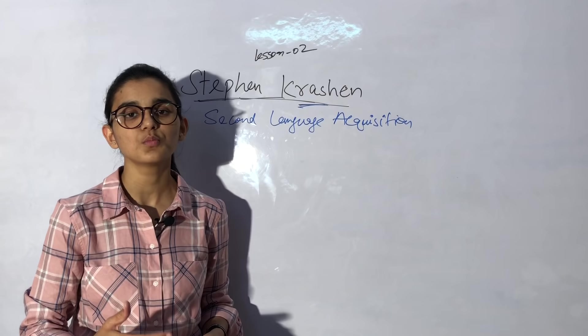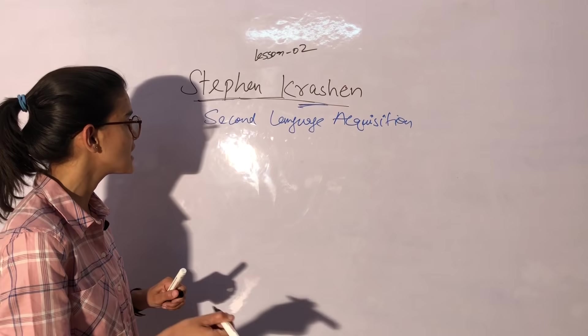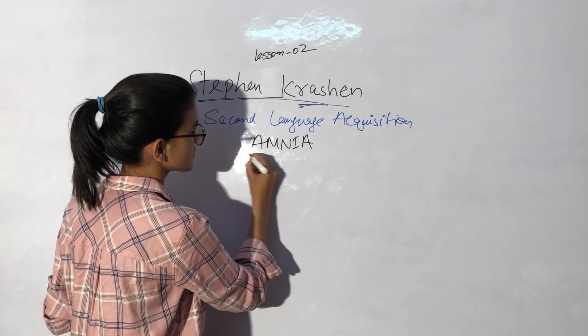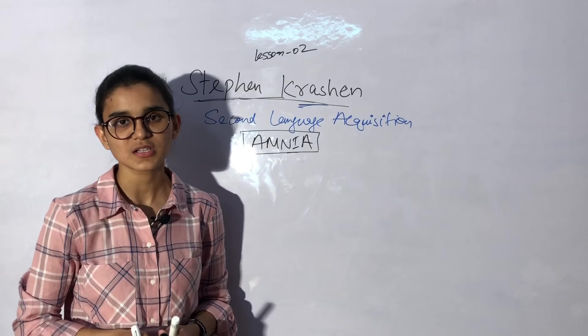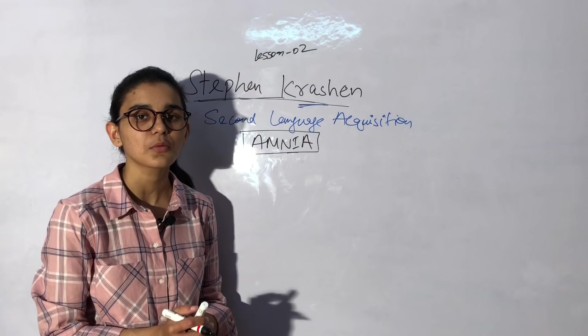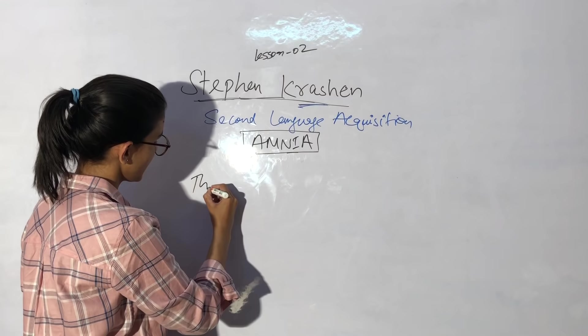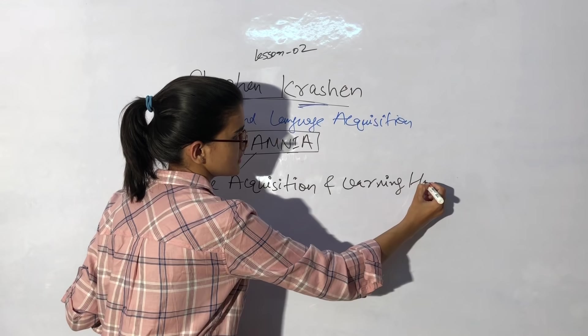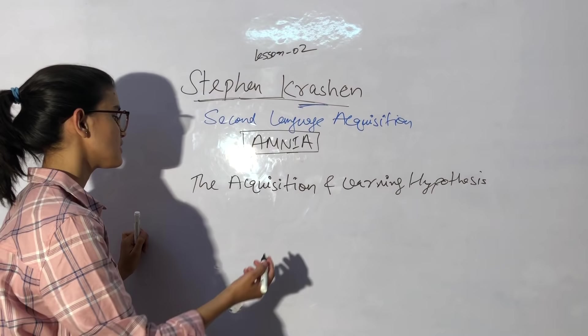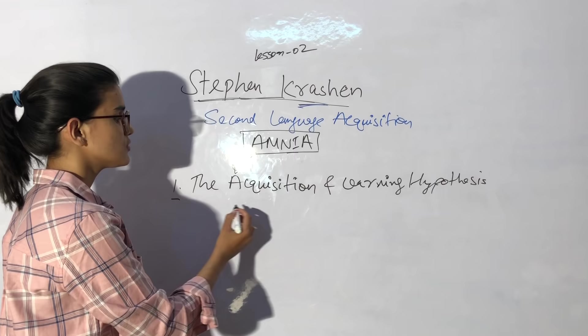Stephen Krashen says that we can acquire another language. There are 5 hypotheses that he created. The theories came in mnemonics - the short form is AMNIA, which helps you remember the 5 hypotheses. First you have the acquisition and learning hypothesis.